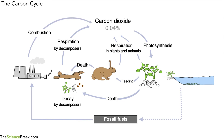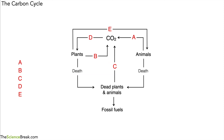So that is pretty much the carbon cycle. Here is the carbon cycle drawn slightly differently. The idea is to name the processes A, B, C, D, and E. Have a look at this — rewind the video if you need to take another look, and see if you can name the processes in the different parts.